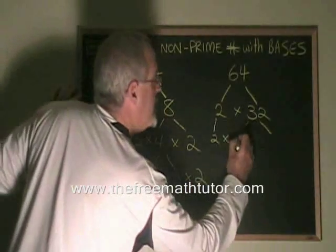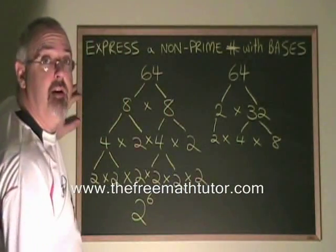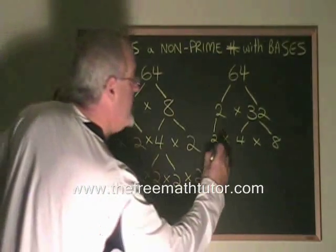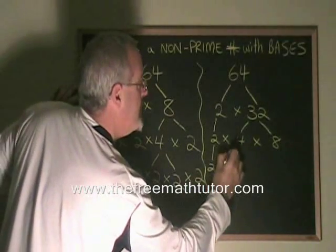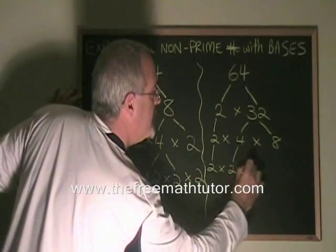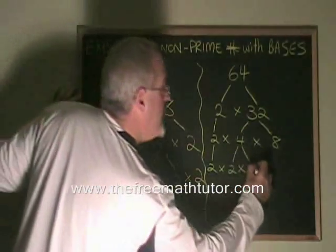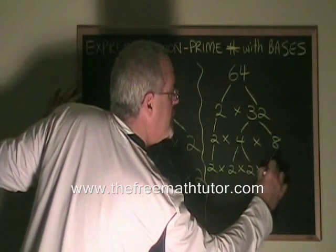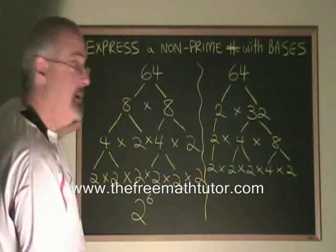We can use 4 times 8. Since the 4 and the 8 both have factors, we have to continue. This 2 is carried down. This 4 turns into 2 times 2. We have found prime factors of that part. And the 8 can turn into another 4 times 2. Still not finished. We have one 4 left to deal with.